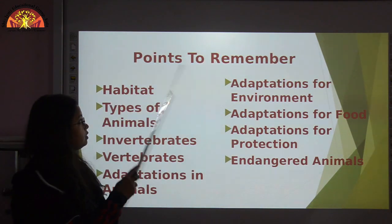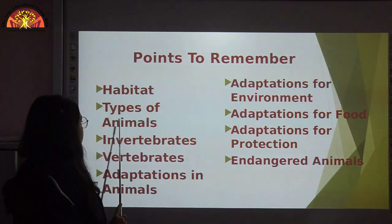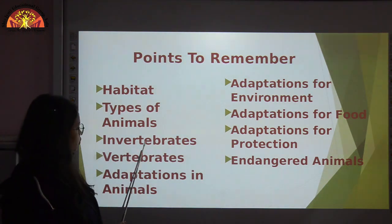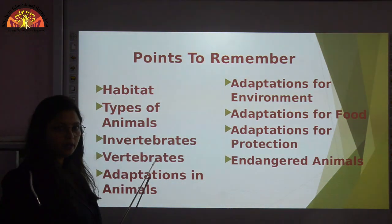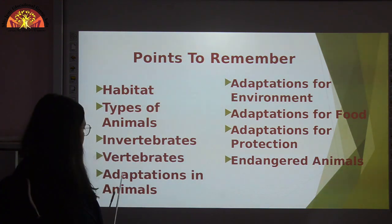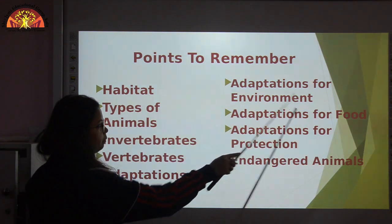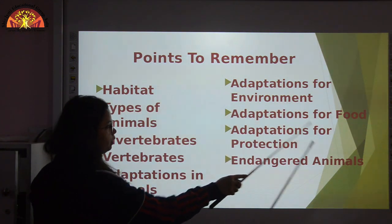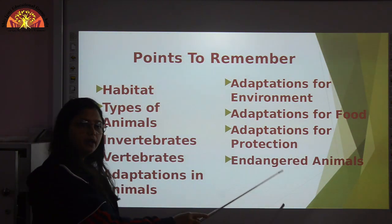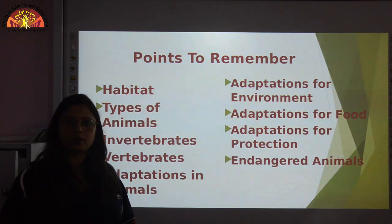Different points to remember in this chapter are habitat, types of animals — there are two types: invertebrates and vertebrates. In this chapter you have also learnt about adaptations in animals: adaptations for environment, adaptations for food, adaptations for protection, and endangered animals. Now we will revise each of these points one by one.